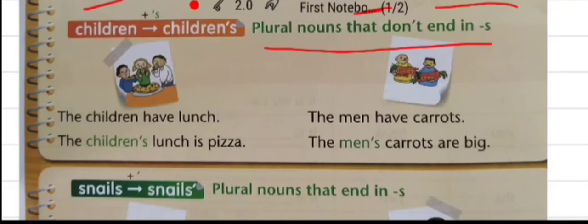For example, the children have lunch. The children's lunch is pizza. Children is a plural noun, so here we will put apostrophe then S.